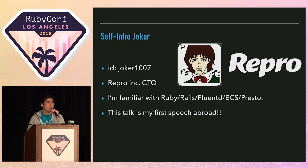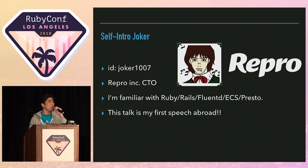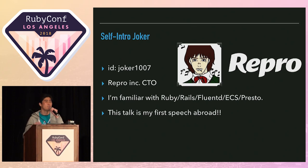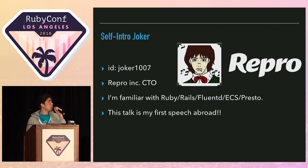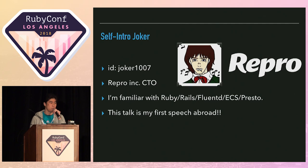At first, let me introduce myself. My name is Tomohiro Hashidate and I come from Japan. But my friends call me Joker, or Joker-san, because my Twitter ID is joker1007. Please remember me — Joker.